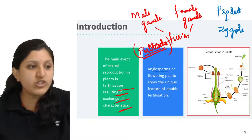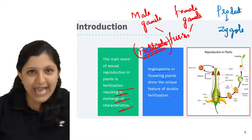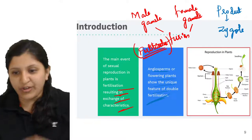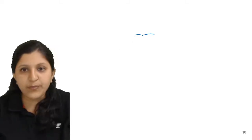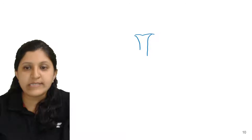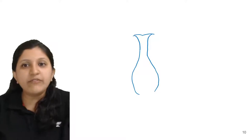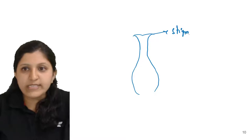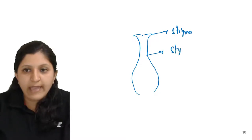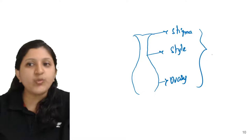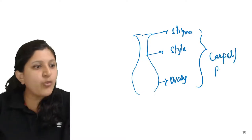In the case of angiosperms — that is, flowering plants — they show the unique feature of double fertilization. Now let's look at the plant structure. There is a stigma, a style, and then an ovary. These three parts together are called a carpel, or we can also call it a pistil.